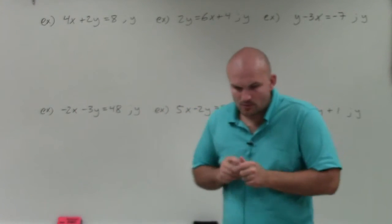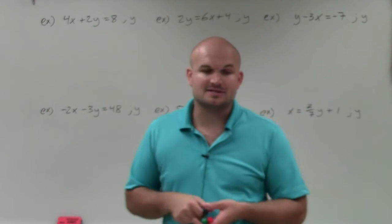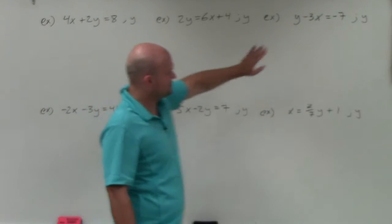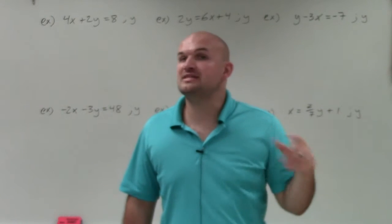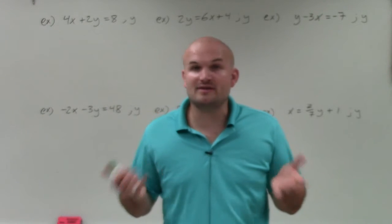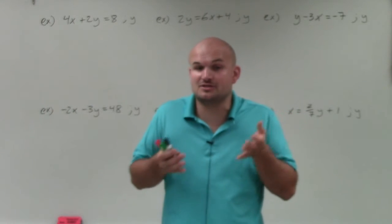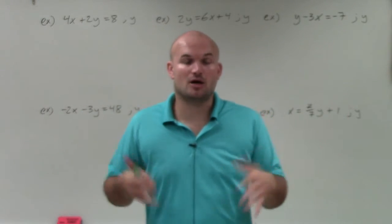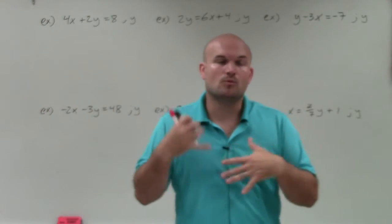When we're solving literal equations, we're going to have more than technically one variable. So we need to identify the variable that we're solving for. All we're going to do is isolate that variable, which is y, by using our inverse operations. The difficult thing with literal equations, as compared to regular one-variable equations, is that a lot of times when we're combining like terms or operations, we can't because we don't have like terms. You can only combine variables that are like terms and numbers with numbers — you can't combine a number with a variable.